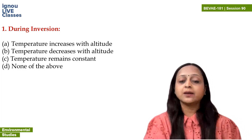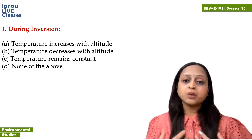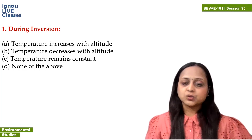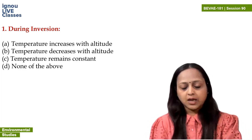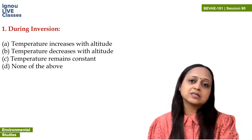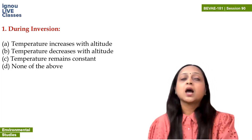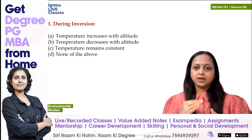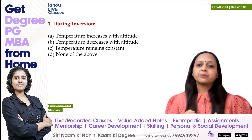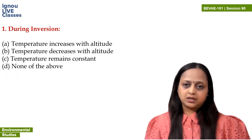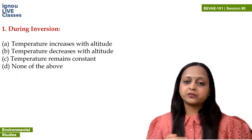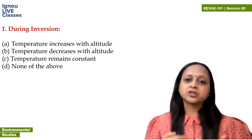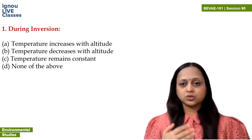The first layer of the atmosphere is the troposphere, where we live. The second layer is the stratosphere, third is the mesosphere, then the exosphere and thermosphere. In the troposphere, temperature decreases with height. In the stratosphere, temperature increases with height. In the mesosphere, temperature again decreases.